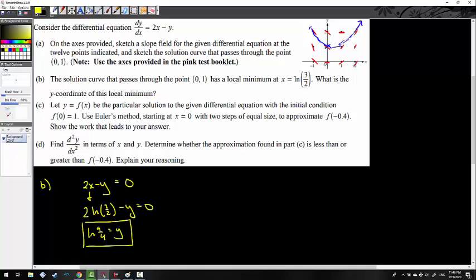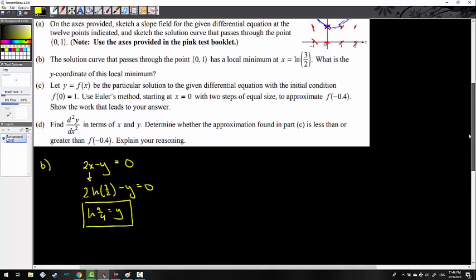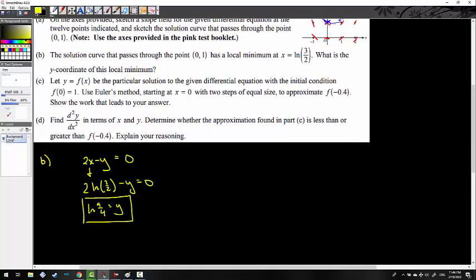So pretty straightforward FRQ so far until now, because we're doing Euler's method. But in this case, it's one of those rare times in Euler's method where we're actually finding, if we read the question here, it says let f(x) be the particular solution to the differential equation with the initial condition f(0) being 1. Using Euler's method starting at x equals 0 with two steps of equal size, approximate f(-0.4), and then show the work that leads to the answer. So this is one of those rare situations when we're using Euler's method to move backwards instead of moving forwards. But moving backwards is the same as moving forwards, except you're just moving backwards. So we can do that. We can move backwards here. We can moonwalk.